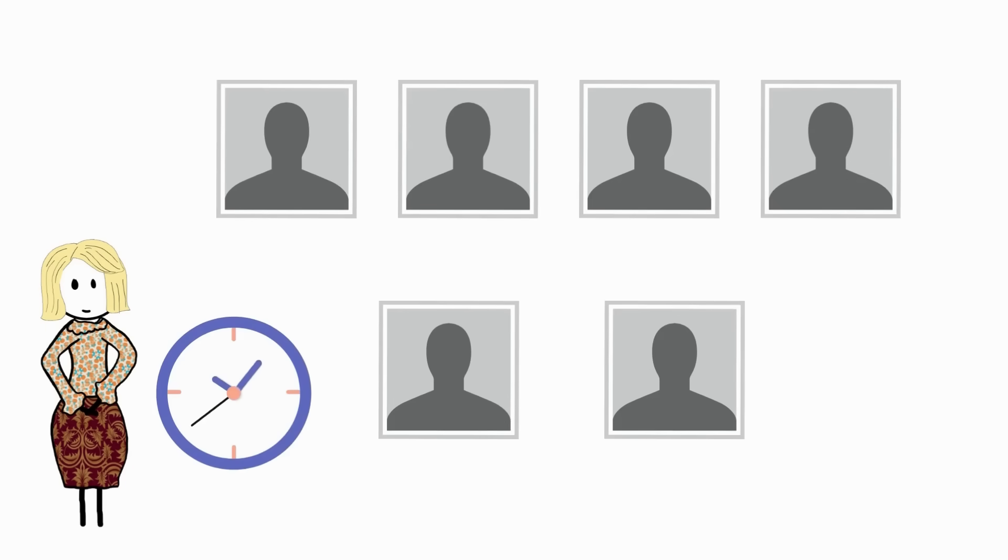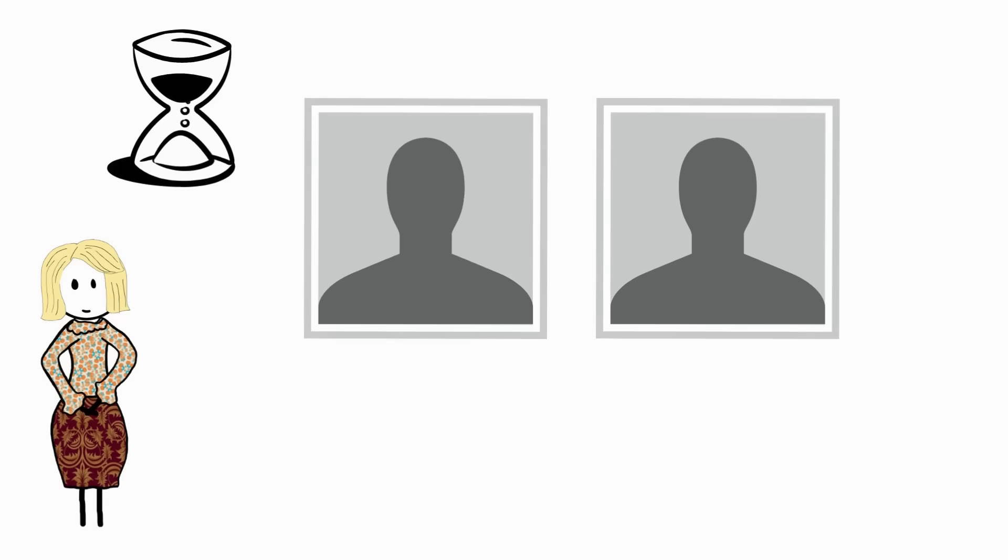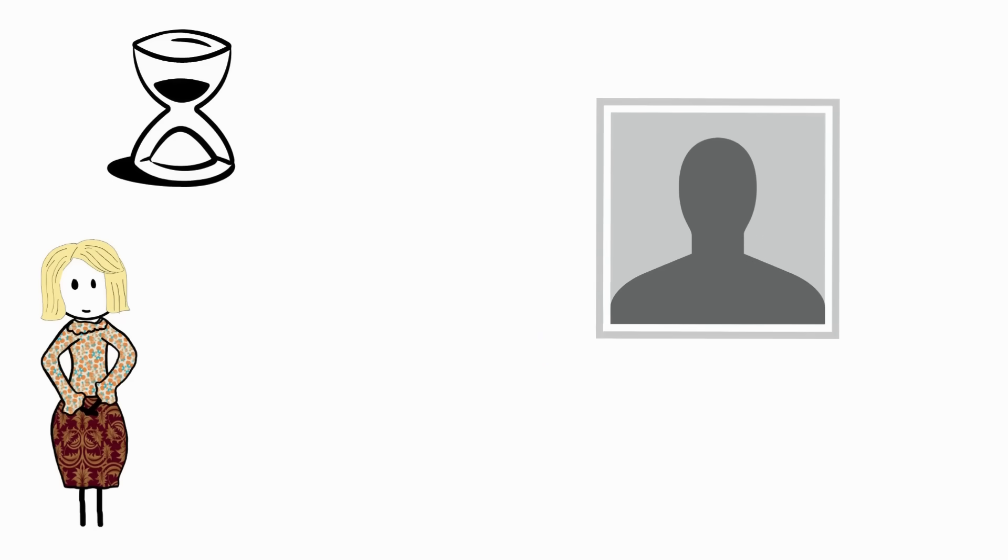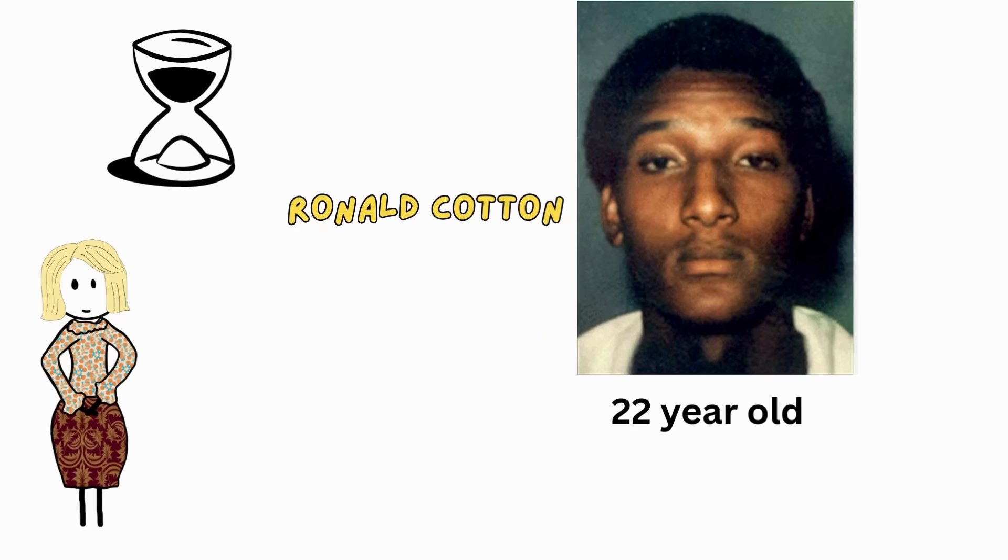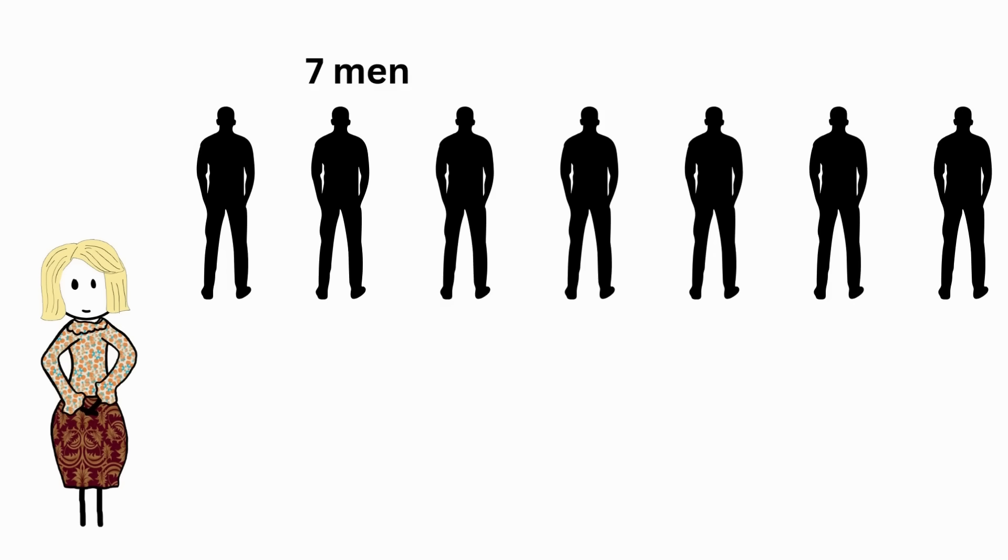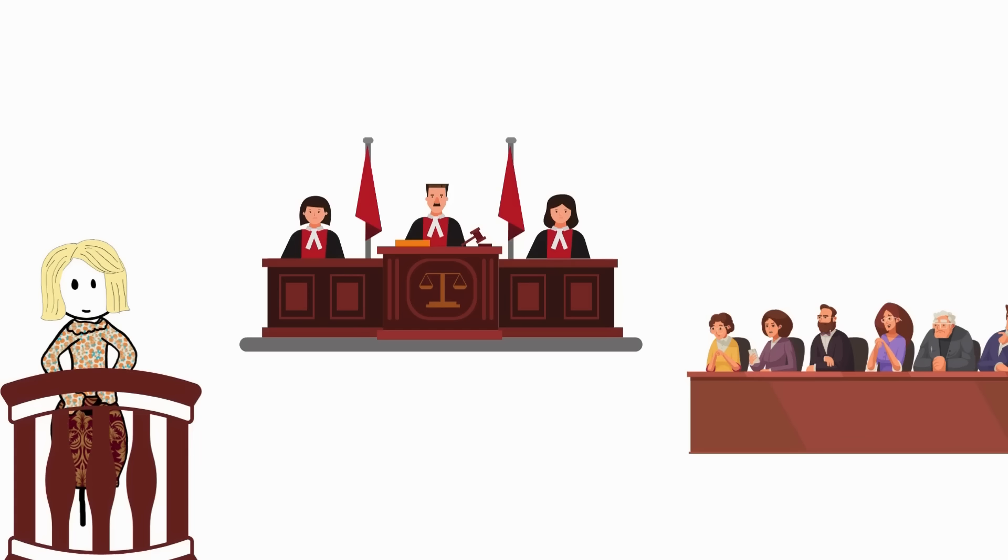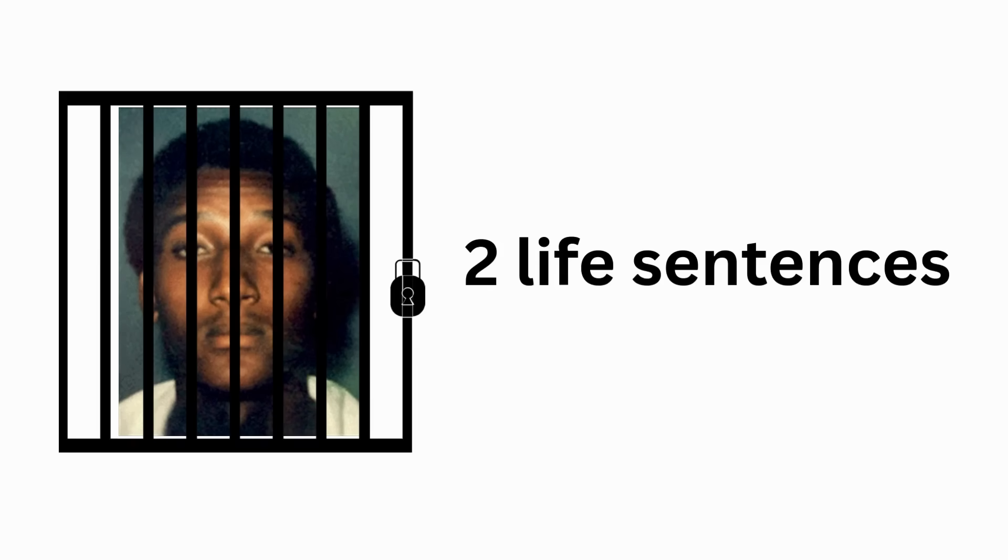Jennifer was then shown photographs of six men. She took several minutes, after which she chose two photos, and then, more time before finally choosing a picture of then-22-year-old Ronald Cotton saying, I think this is the guy. On viewing a lineup of seven men, she again wasn't sure but eventually decided that Cotton looked most like her assailant. Her testimony in court led to the conviction of Cotton on two life sentences.